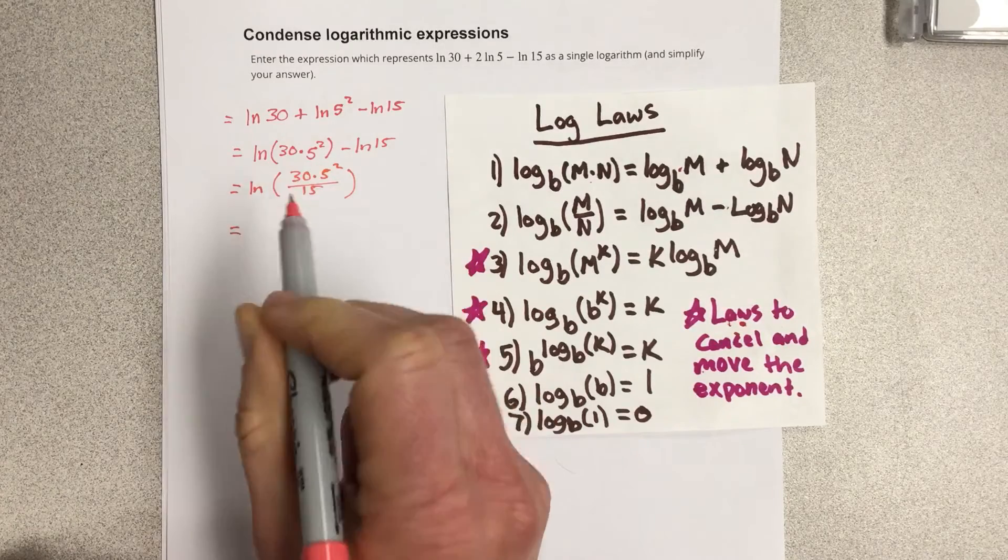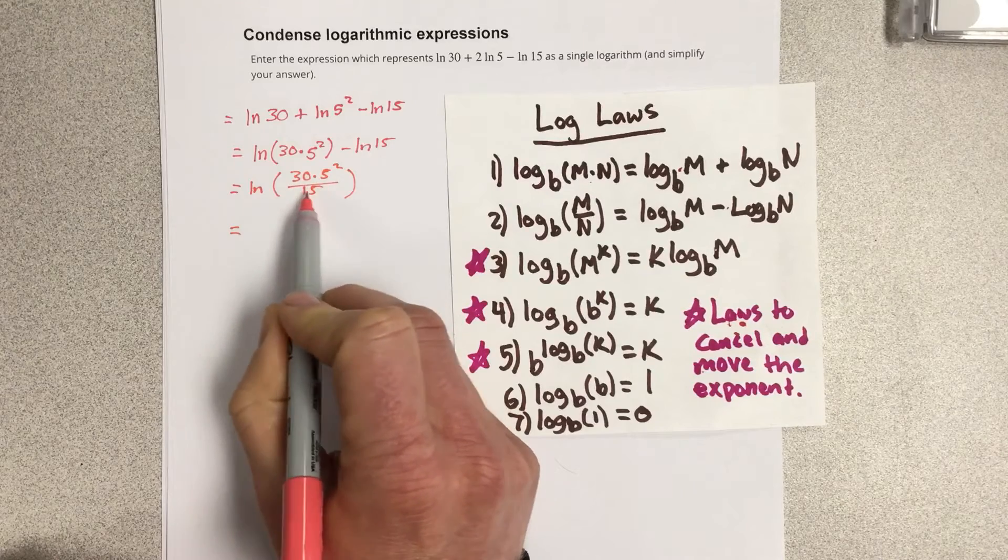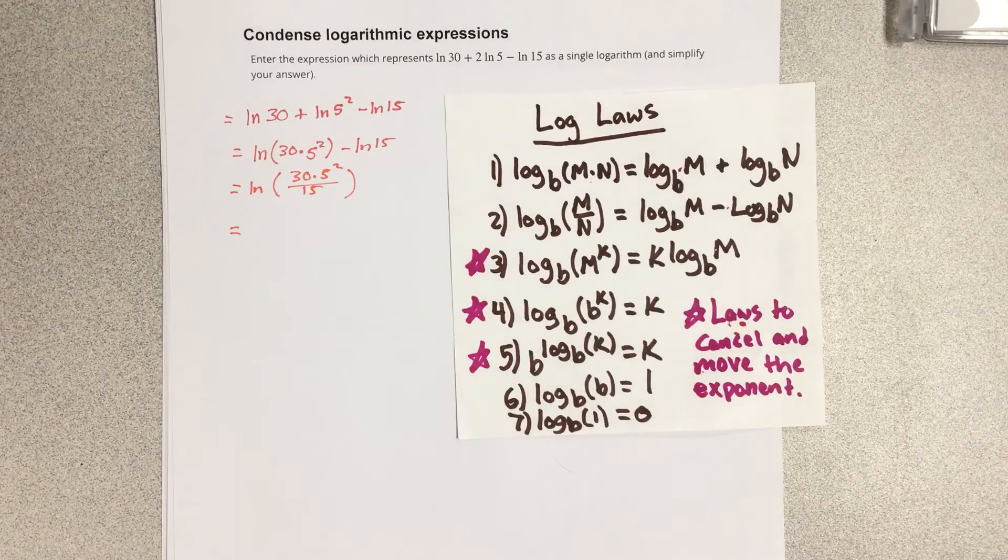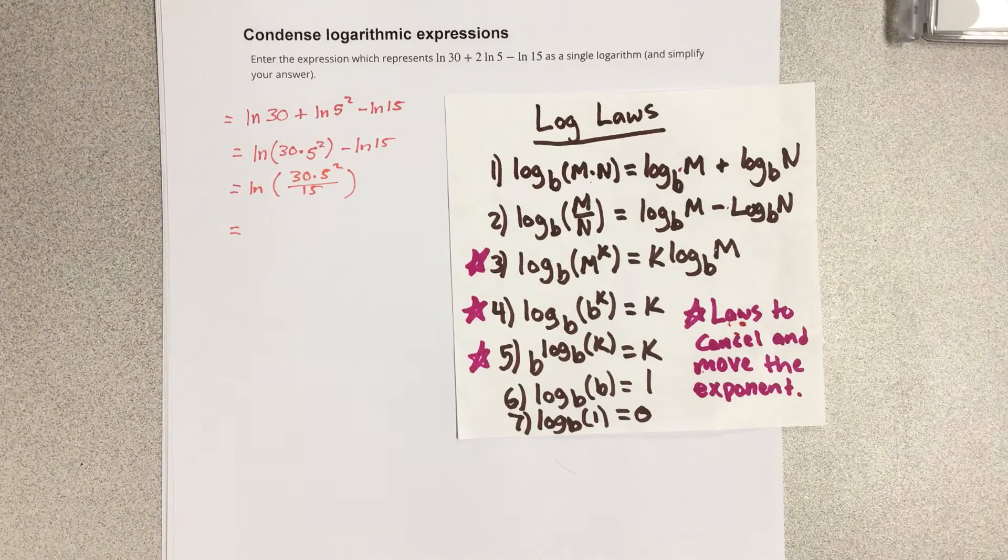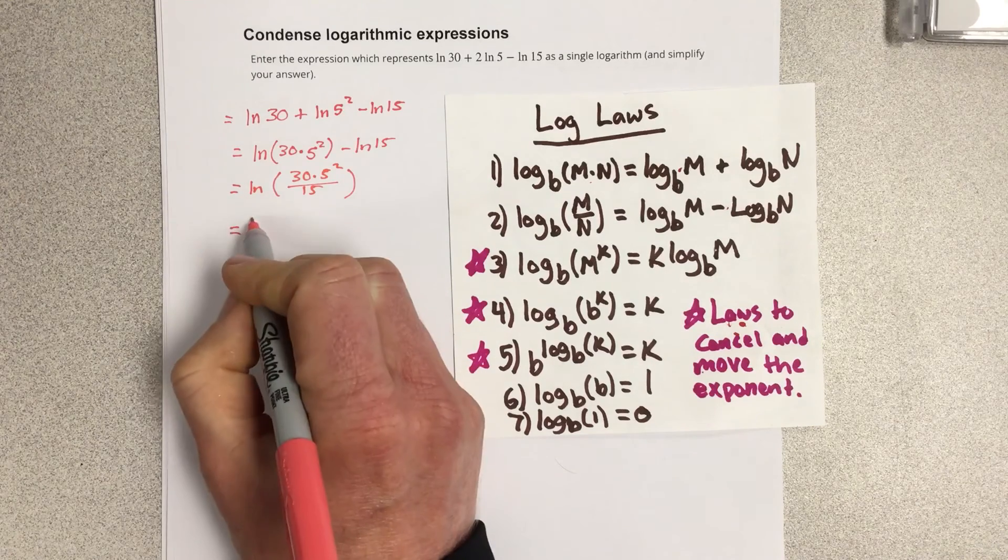That's condensed to one logarithm. If you want to go a little farther, you could multiply all this out. And if you multiply that out, you would get 5 squared is 25, and you get natural log 50.